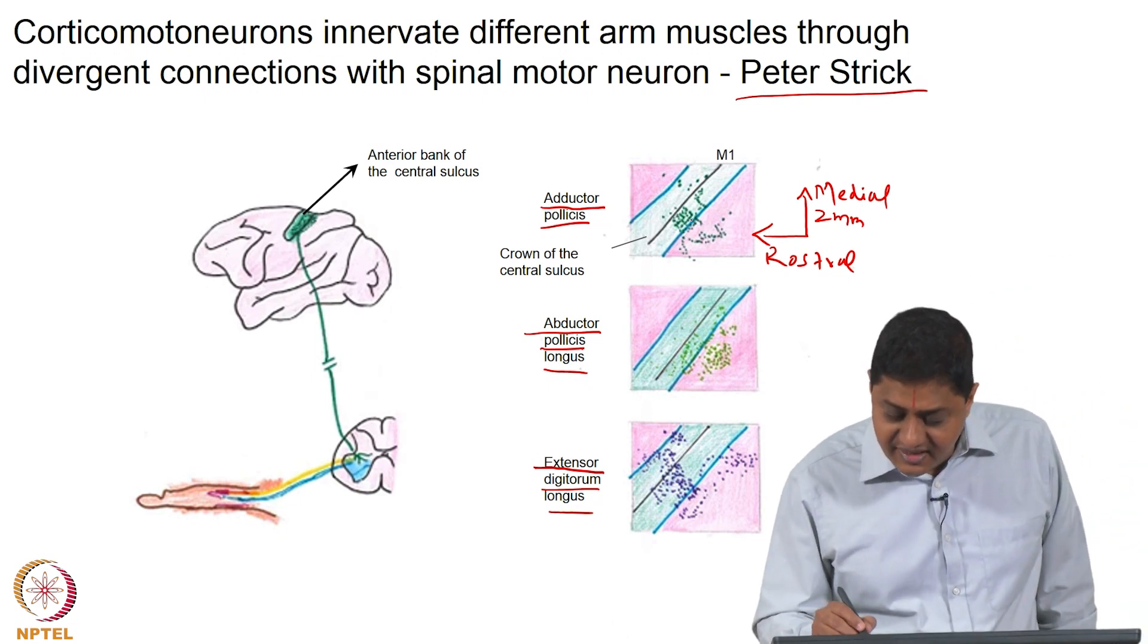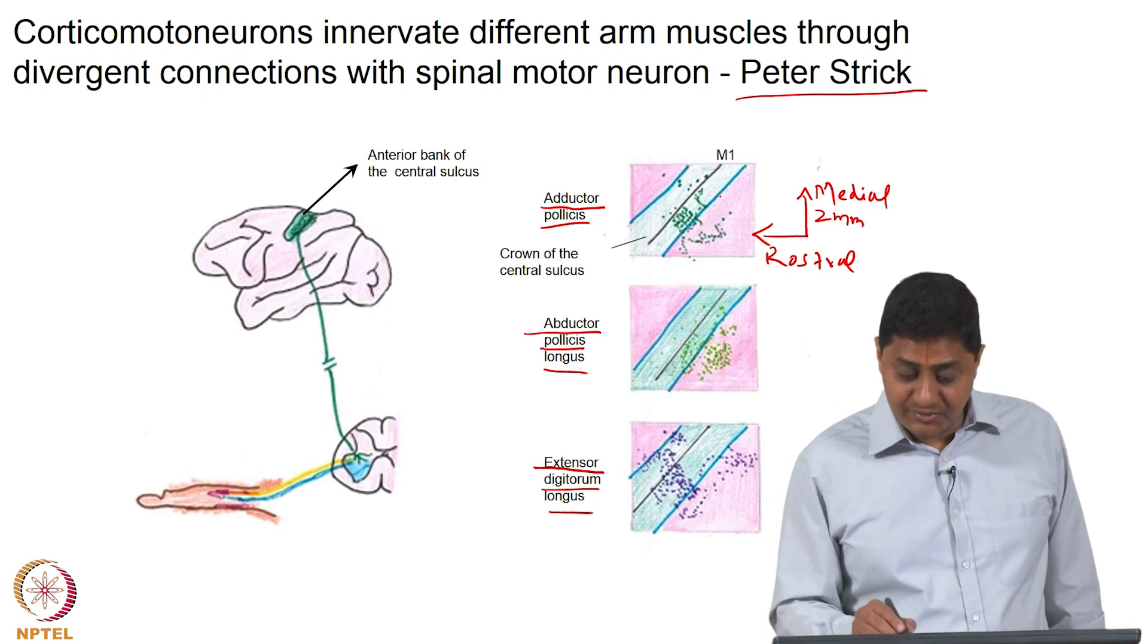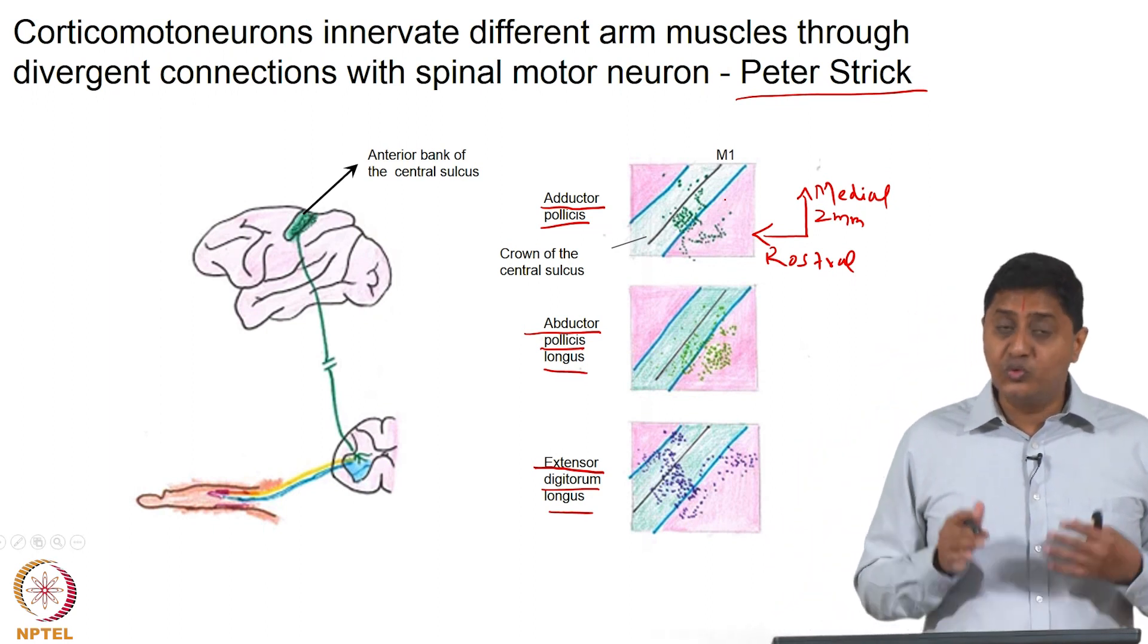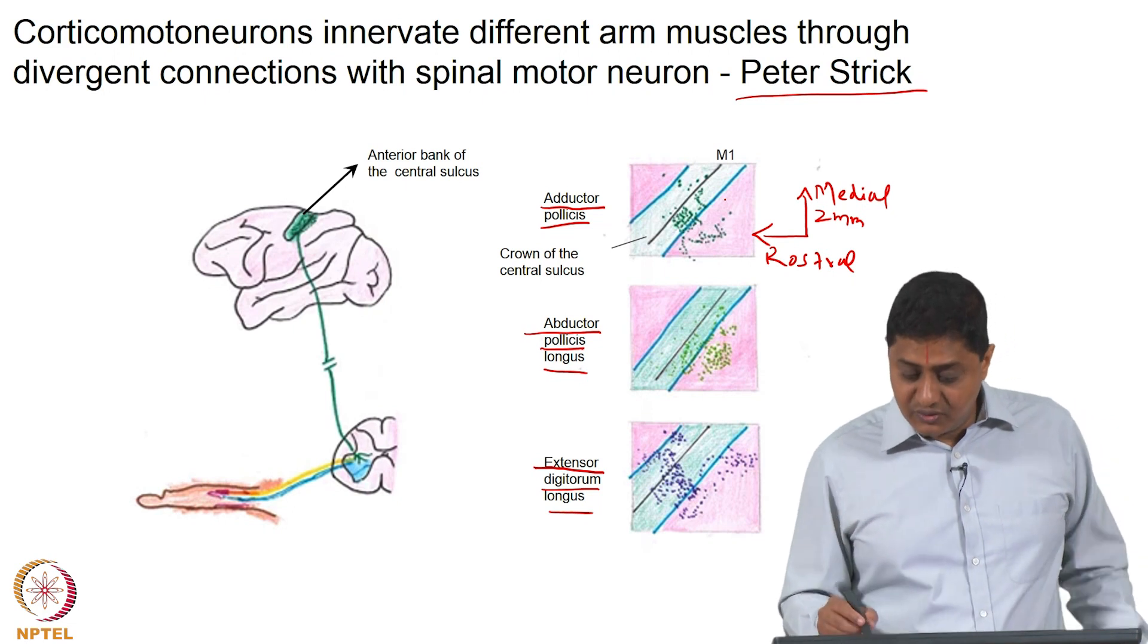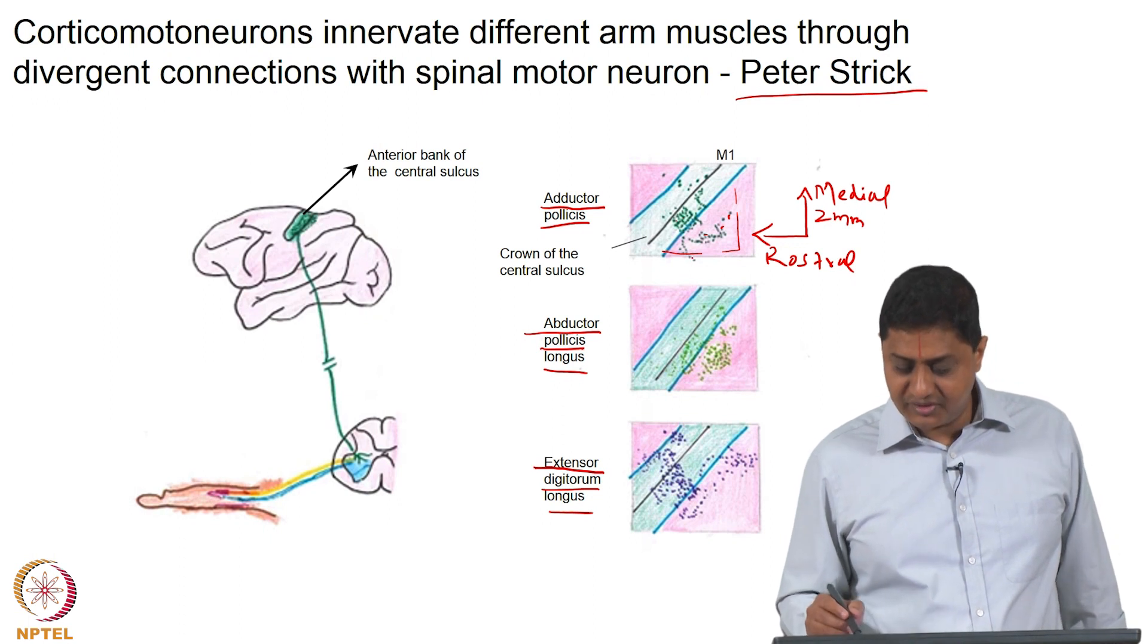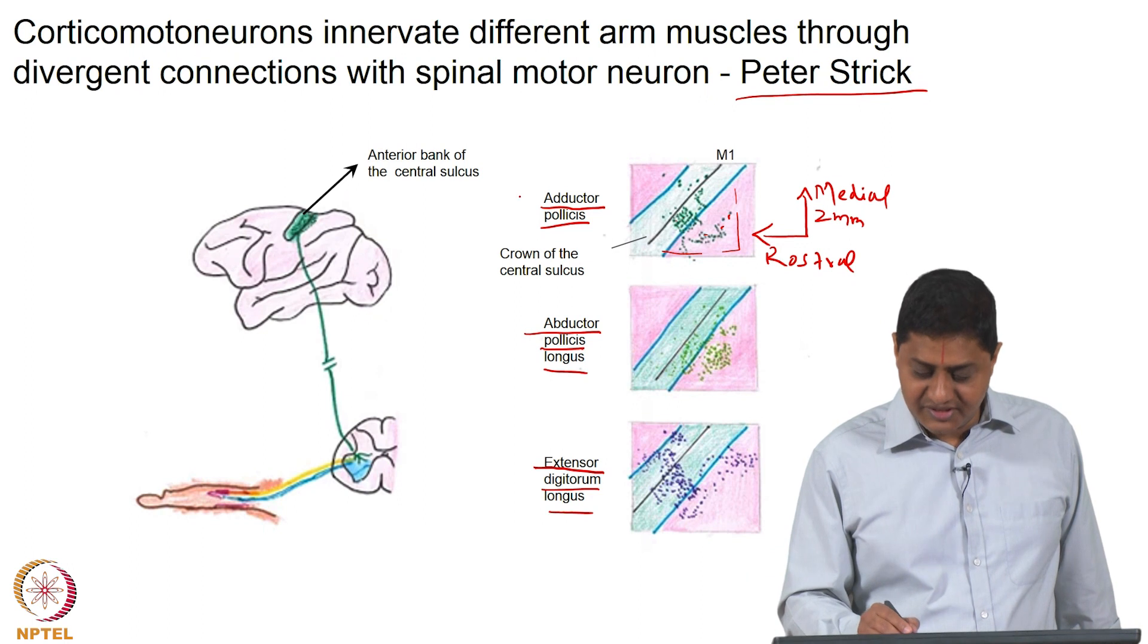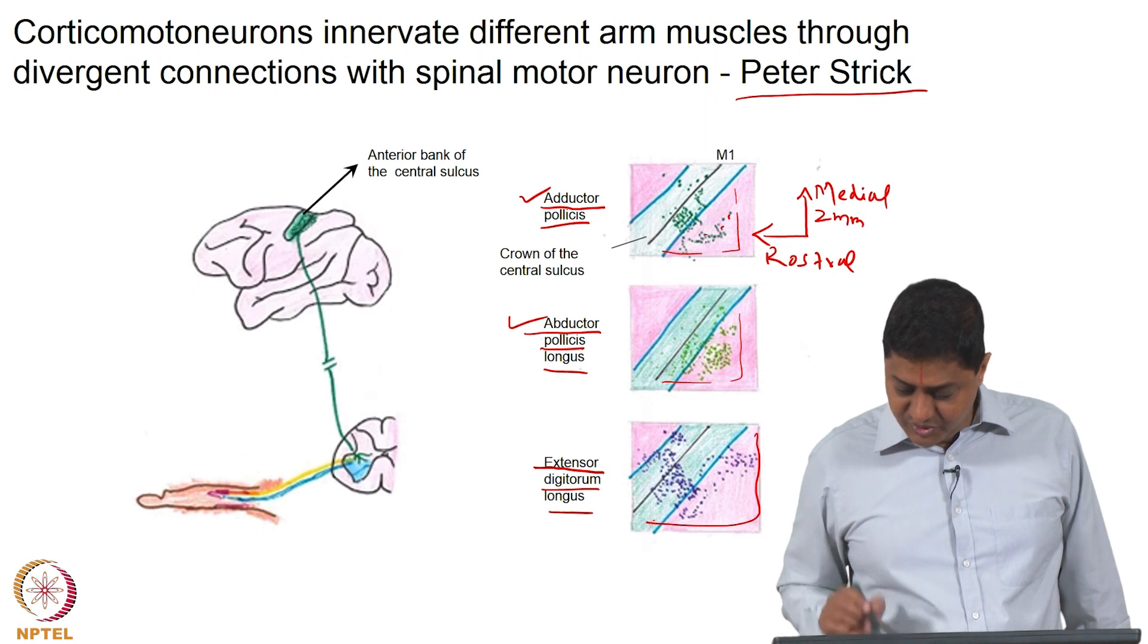Anterior to the central sulcus you have primary motor cortex. Within the primary motor cortex the most caudal part is the part that is very close to the central sulcus. What this shows is that there is a distribution. For this muscle the control or the neurons that control this particular muscle are distributed over a relatively large area. 2 mm is a relatively large area in neuronal terms. You see that there is a great amount of distribution of neurons that control this particular muscle. Likewise for different muscles, there is an even greater distribution.